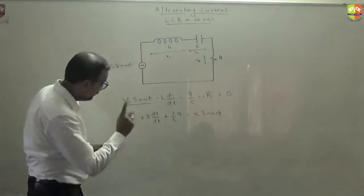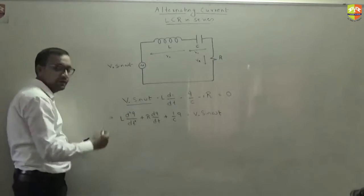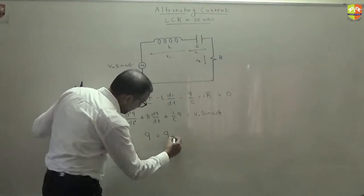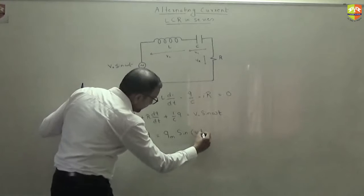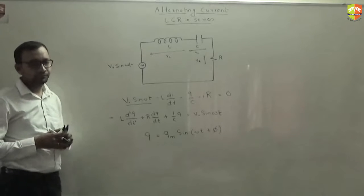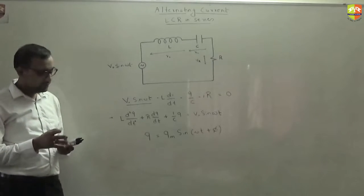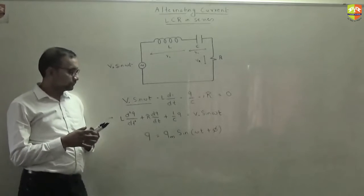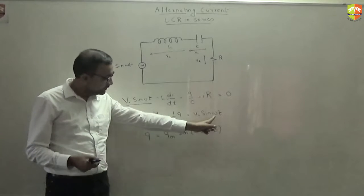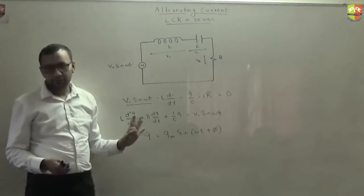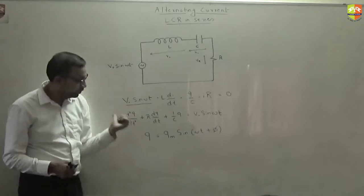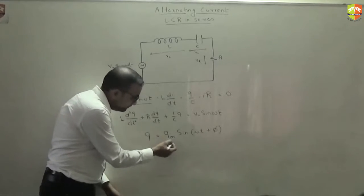So we will assume that the solution of this differential equation is given as Q is equal to Q_M sine of omega t plus phi. This omega and the driving frequency omega, they are same, because this frequency is the property of the system. The system is oscillating with this frequency omega, so omega will not change. But we don't know what is Q_M and we don't know what is phi.